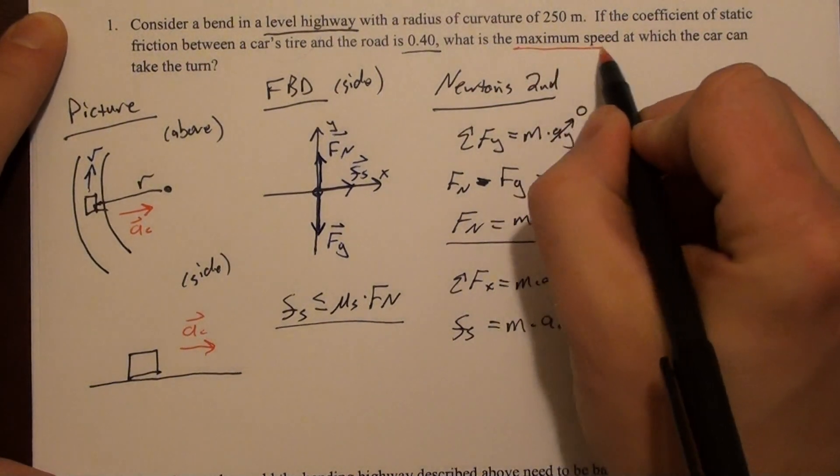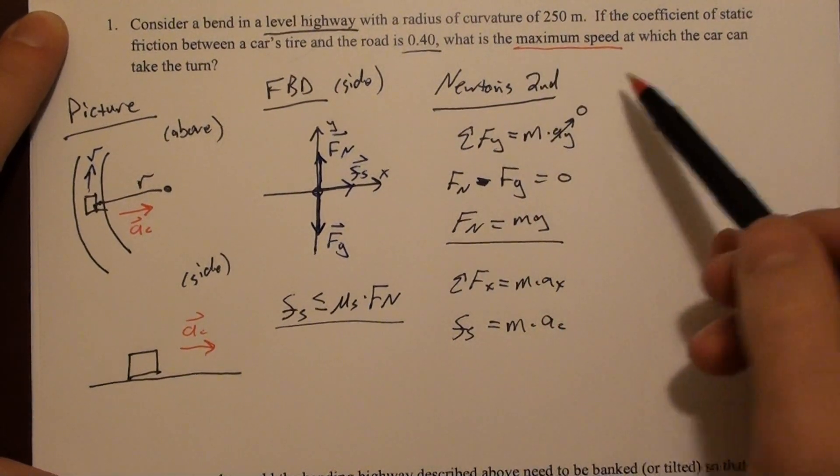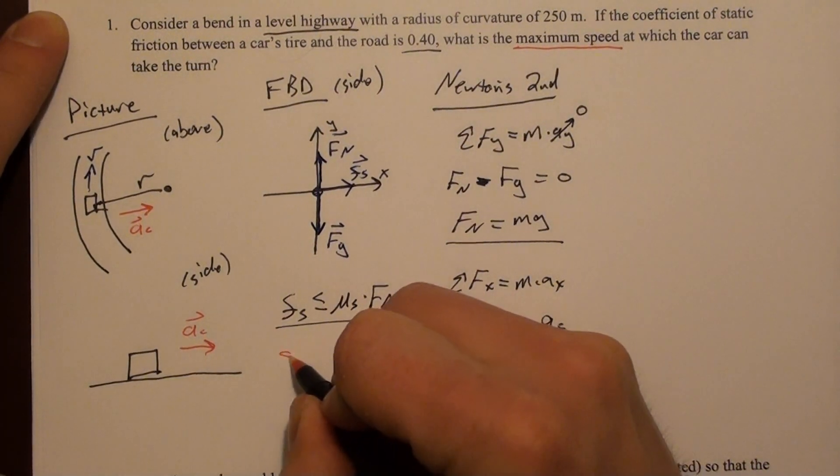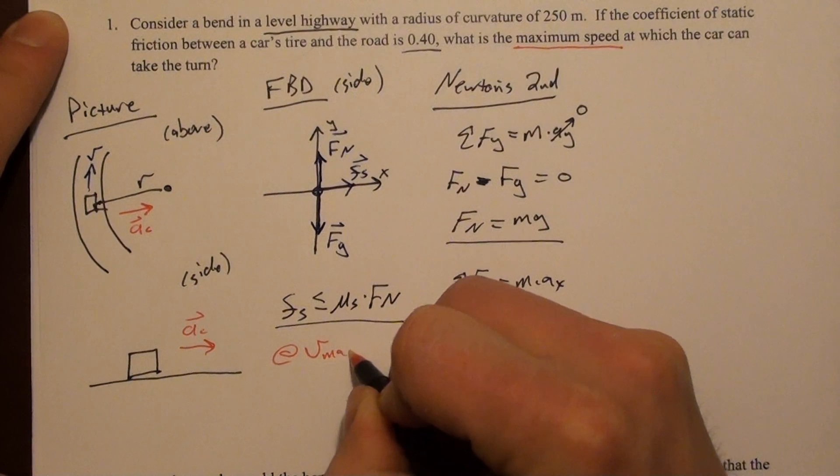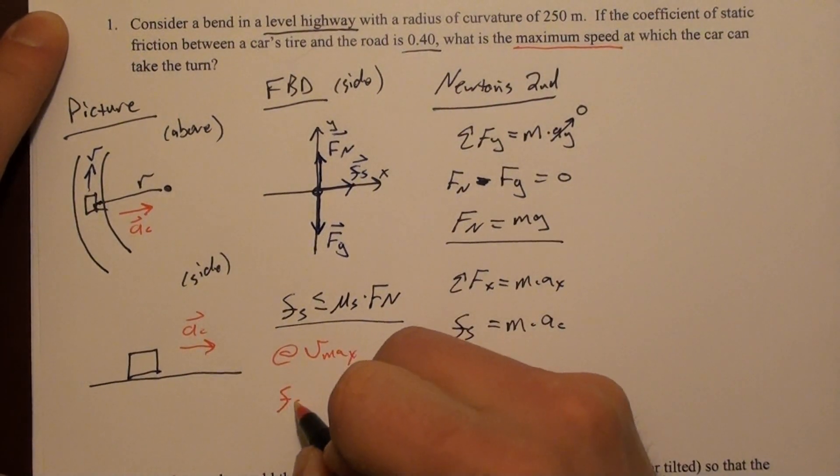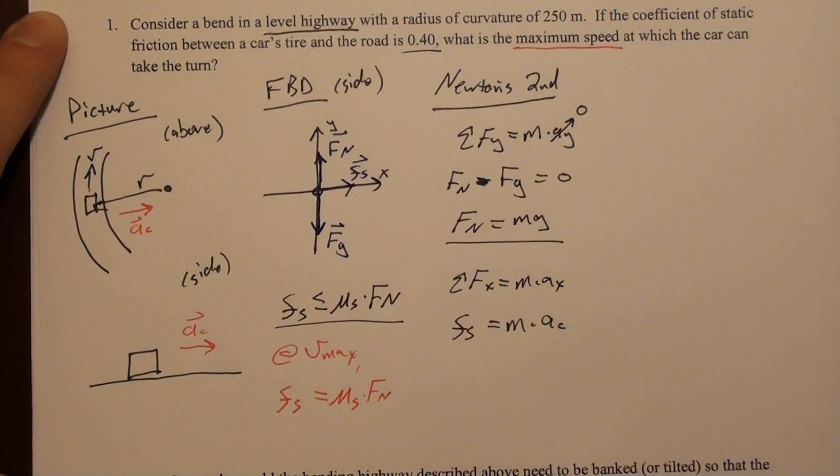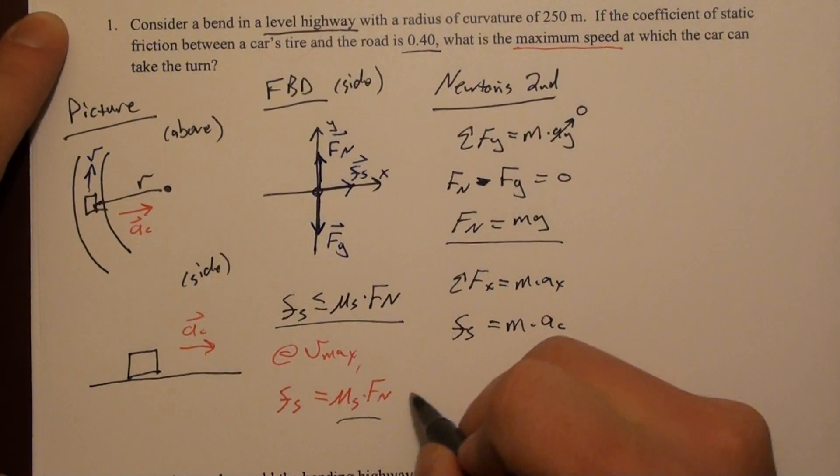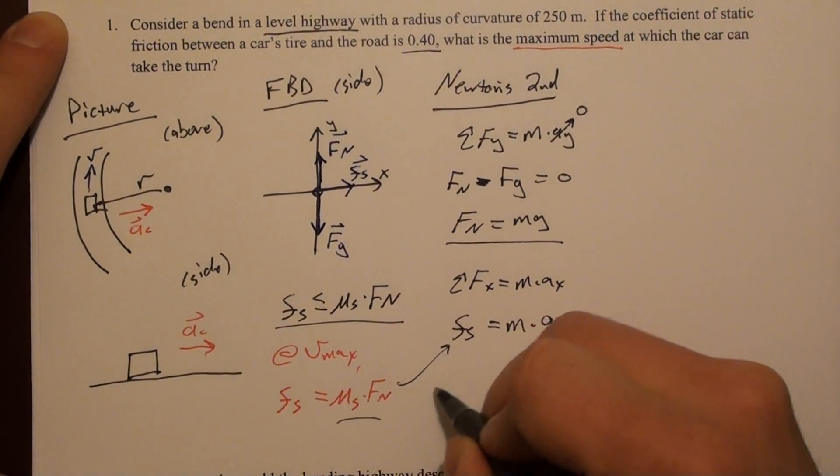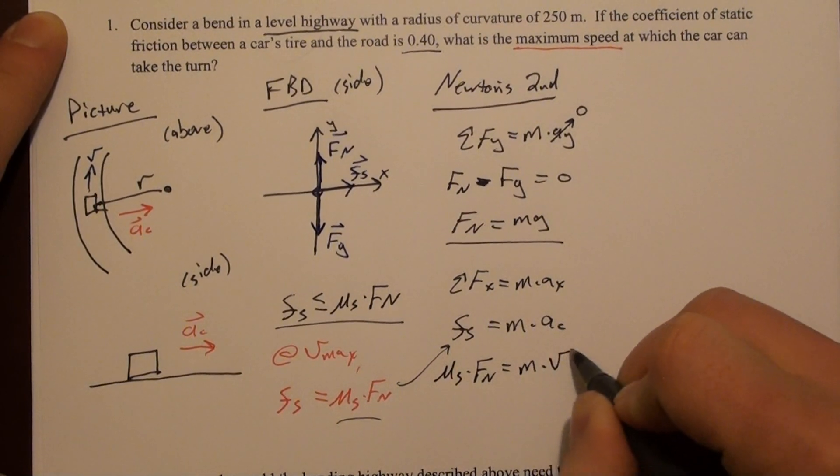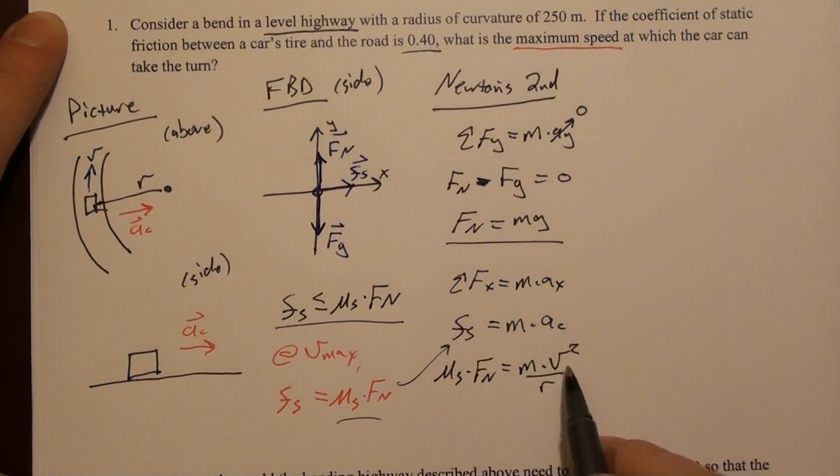We're asked to find v_max, the maximum speed. At this maximum speed, we're maxing out static friction. So at v_max, the static frictional force equals μ_s times the normal force. This is the critical point. We're going to use this and say μ_s times the normal force equals m v² over r, where v² here is v_max.